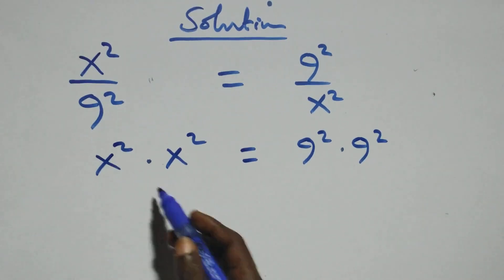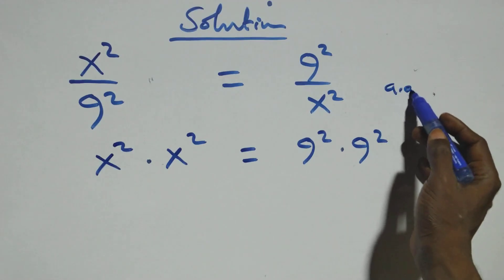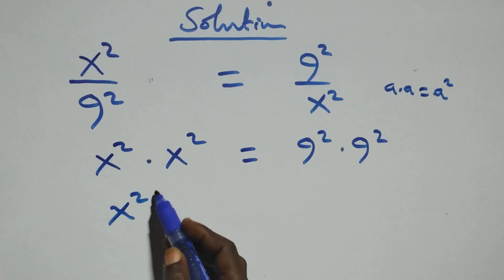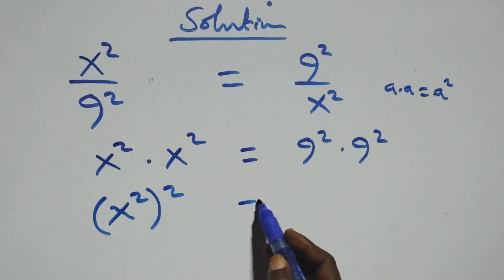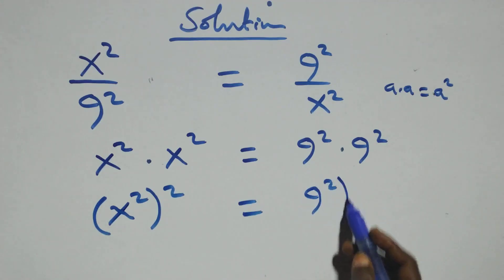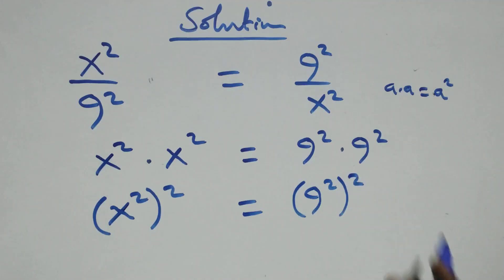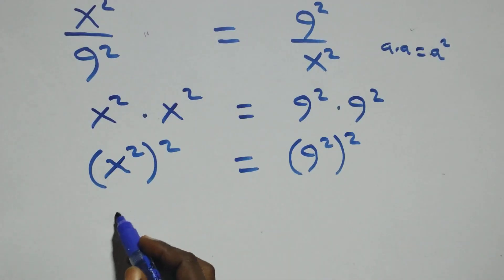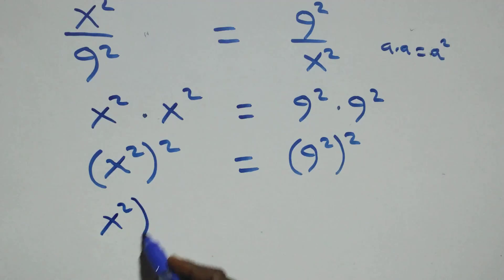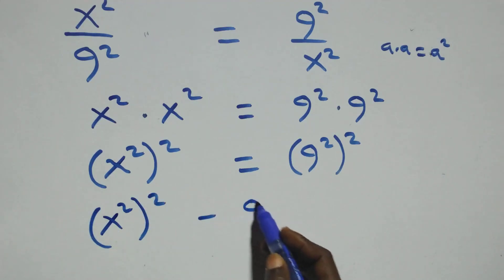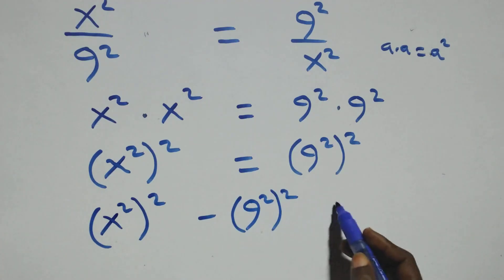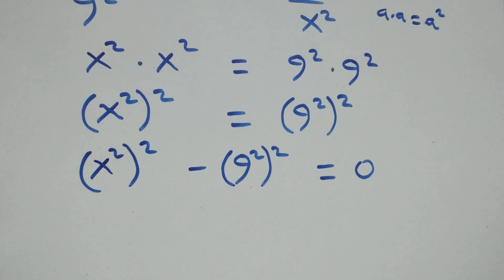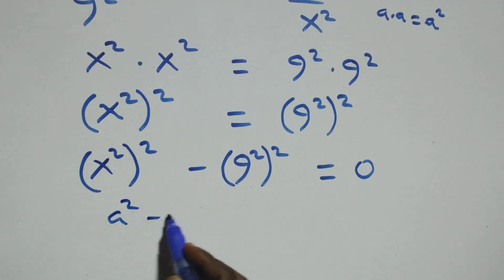When multiplying, a times a is simply a squared, so we can write this as (x²)² equals (9²)². Taking the right-hand side to the left-hand side, we get (x²)² minus (9²)² equals zero.